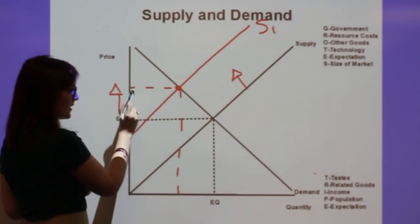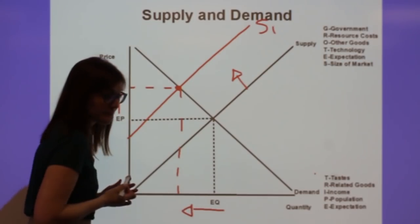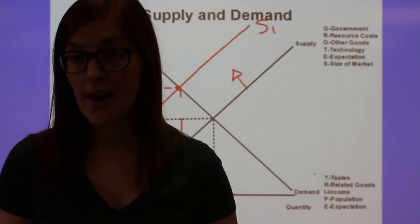And what happens when we have a new equilibrium is that creates a new equilibrium price and a new equilibrium quantity. So here we would see that equilibrium price goes up, moving from here to here. And equilibrium quantity falls, moving from there to there.